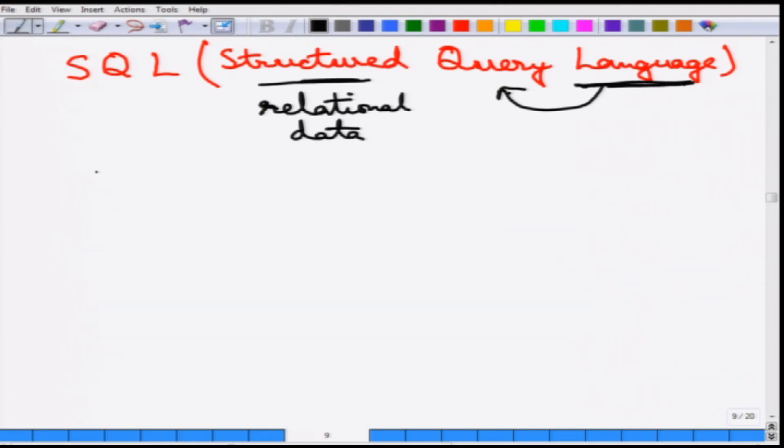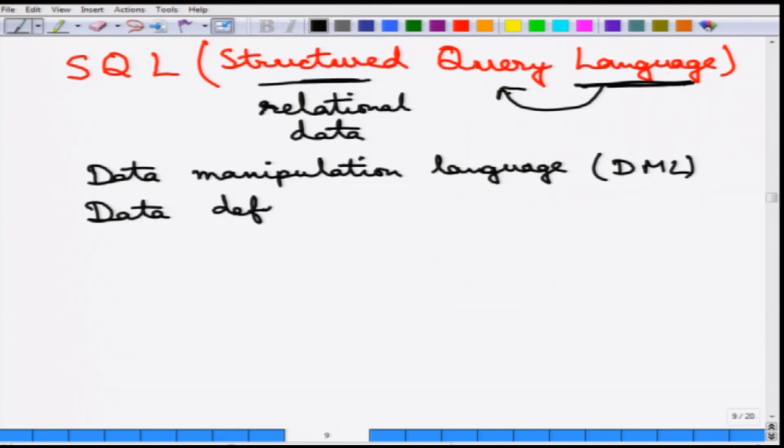It is also what is called a data manipulation language because this lets one manipulate or update values in a database. This is also a data definition language - it allows to define how the data is structured in a relational database.